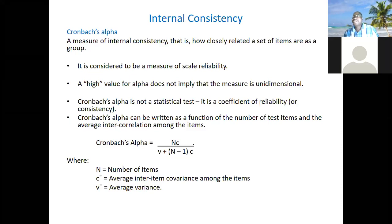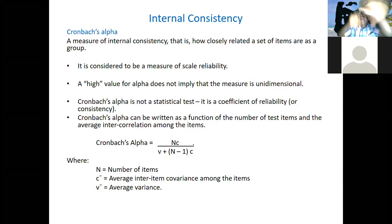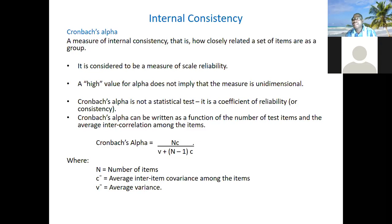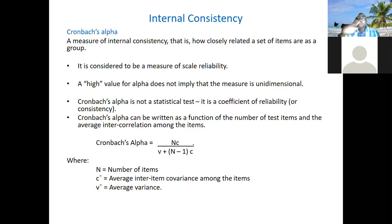Cronbach's approach was to pick one item at a time, correlate its score with all the rest, then pick the next one — doing this for all items and calculating the average. That is what Cronbach did, and he came out with this formula. Cronbach's alpha is very simple. The n here is the number of items. If there are four items, n is four; if there are 20 items, n is 20. Then you have the average inter-item covariance among the items.